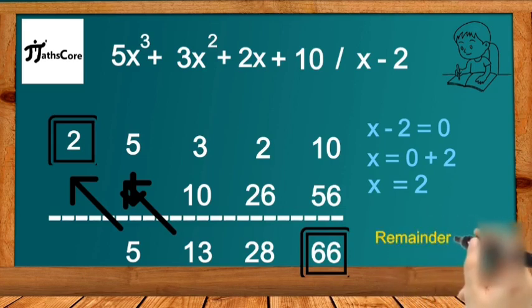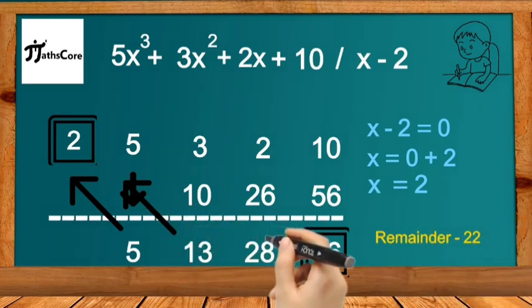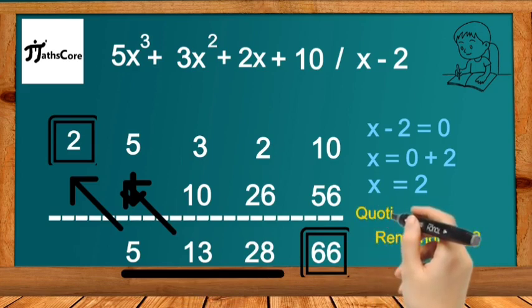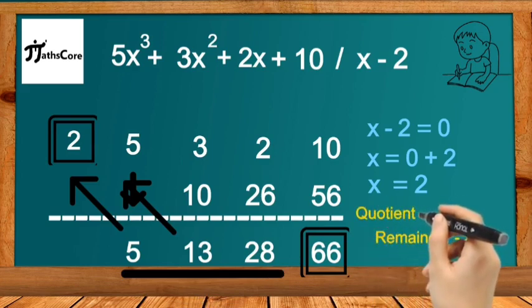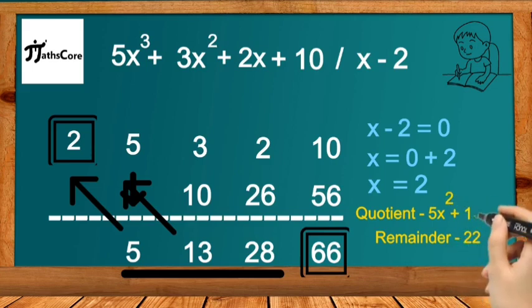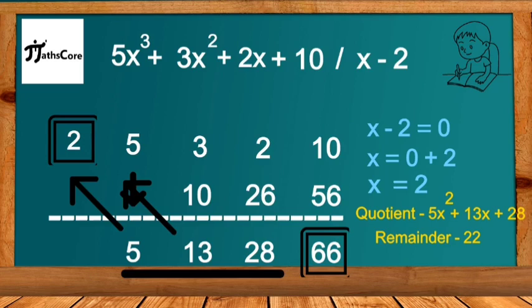The remaining 3 terms we write as the quotient. Since there are 3 terms, the highest degree of the coefficient will be 2, so the quotient is 5x² + 13x + 28. In this way you can find the division of a polynomial using this Vedic math method. If you have any doubt related to this method, you can mention it in the comments. Thanks.